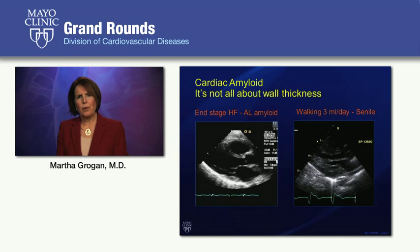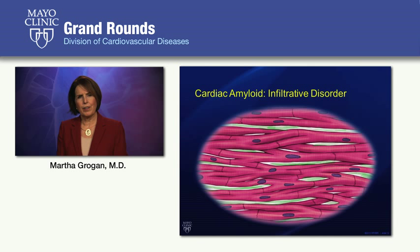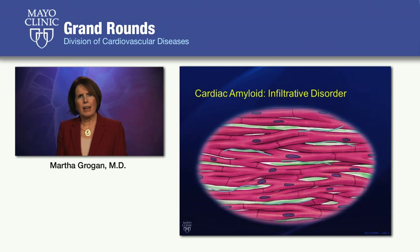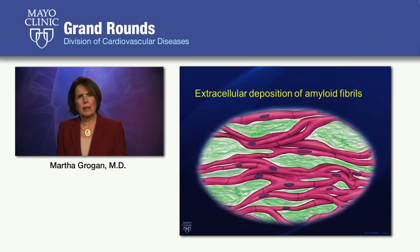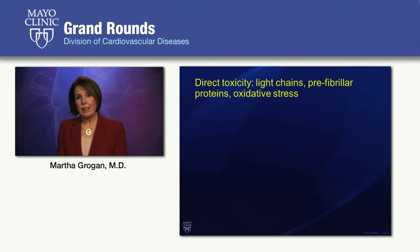Amyloidosis is an infiltrative disorder. Amyloid fibrils deposit in the extracellular space around cardiac myocytes, causing infiltrative cardiomyopathy — a traditional and important mechanism of heart failure. As more amyloid is deposited, cardiac cells become distorted and displaced. Additionally, direct toxicity of light chains has been proposed and proven in animal models — light chains and other pre-fibrillar proteins cause oxidative stress and probably contribute significantly to cardiac dysfunction in AL amyloid.